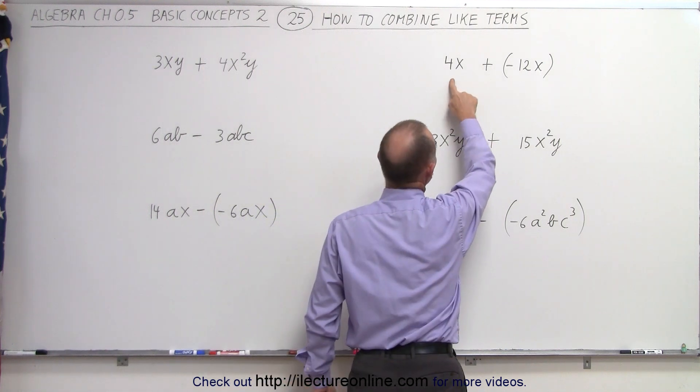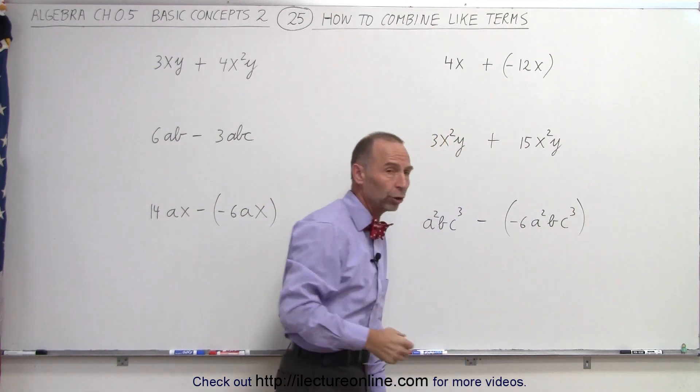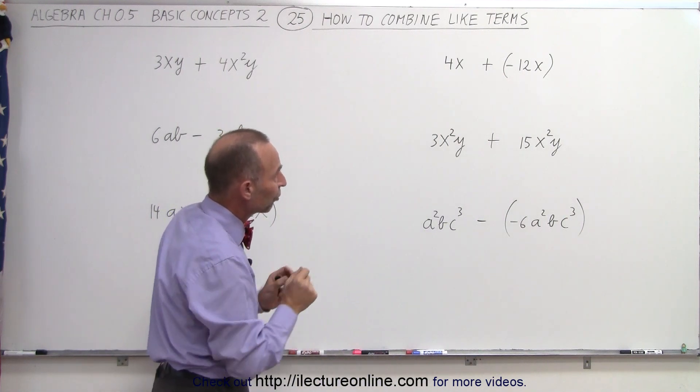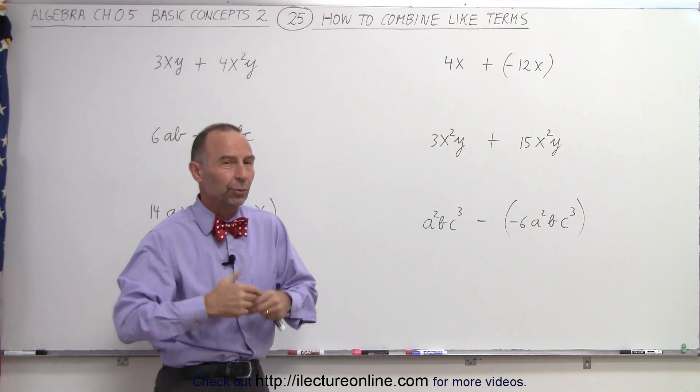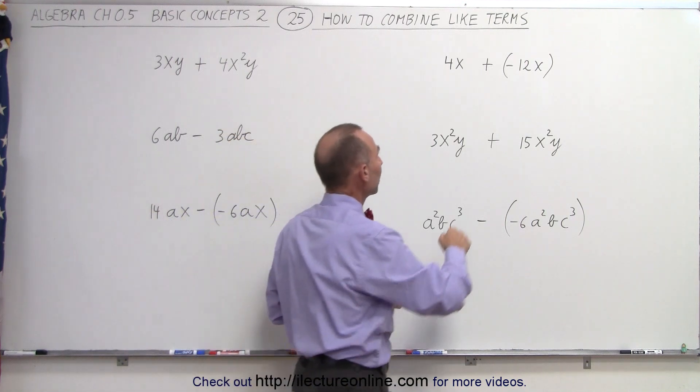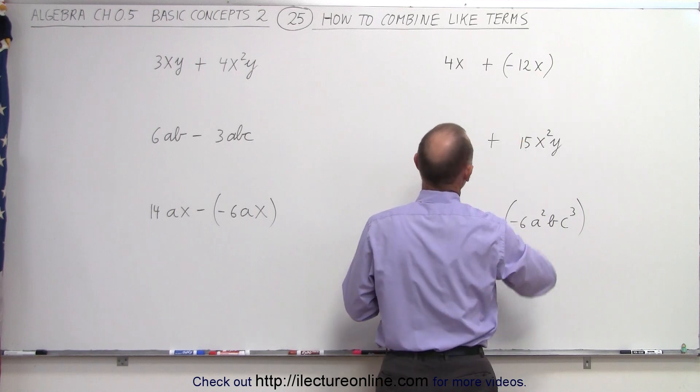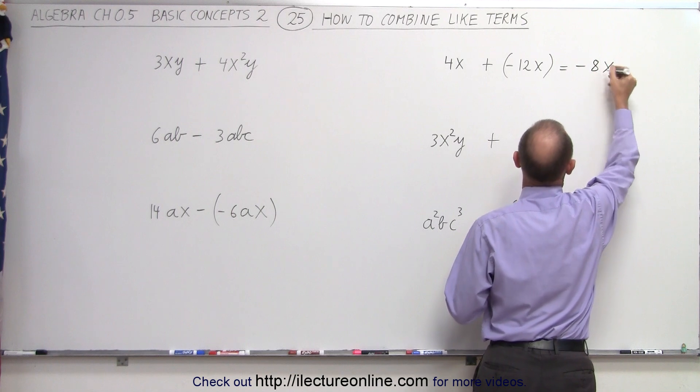We have 4x plus negative 12x. Notice the 4 and the negative 12 are what we call the numerical coefficients or numerical factors. The letter portions of each term—in this case they each have an x—are identical to one another, which makes them like terms. Therefore we can add the two. 4x plus negative 12x, and adding a negative number is like subtracting, so 4 minus 12 equals negative 8x.